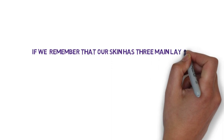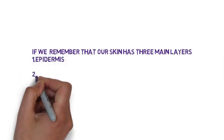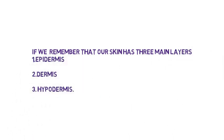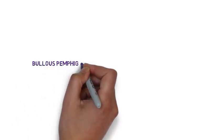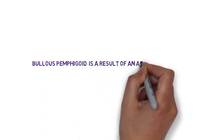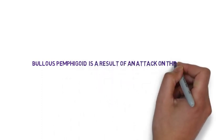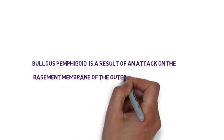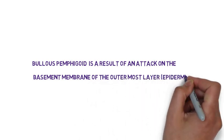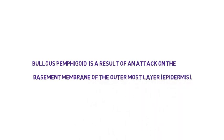If we remember that the skin has three main layers — the epidermis being the top layer, the dermis, and finally the hypodermis — Bullous Pemphigoid is a result of an attack on the basement membrane of the outermost layer, in other words, the epidermis.